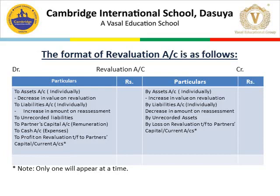The revaluation account's other name is profit and loss adjustment account. On the debit side, we record decrease in the value of assets and increase in the amount of liabilities — all losses and expenses. On the debit side we write: to assets account whenever there is a decrease in value on revaluation; to liabilities account when the amount on reassessment increases; to liabilities account for unrecorded liabilities; to partners capital account if any partner is given remuneration, salary or commission; to cash account when there are certain expenses incurred on revaluation; and to profit on revaluation, which is transferred to partners capital account or current account if partners capitals are fixed.